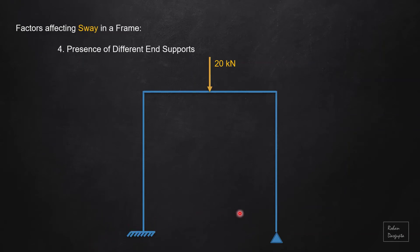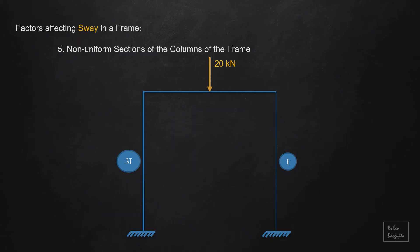Fourthly, if the supports at the end of the columns are different, then it will also be a sway frame. It doesn't matter if the geometry is symmetrical and the loading is symmetrical — if the end supports are different, then it will be a sway frame.